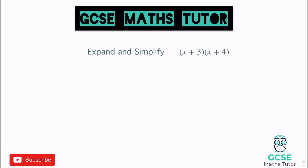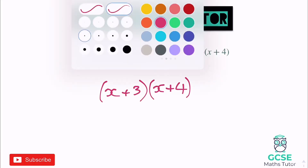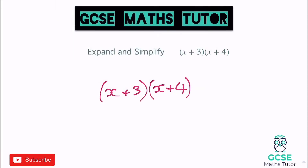There are lots of different ways of doing this, but I'm going to show you the method I use. I'll just rewrite the question: x plus 3 and x plus 4. The first thing I do is expand the first term in both brackets — so we're going to do x times both pieces. First, x times x is x squared.